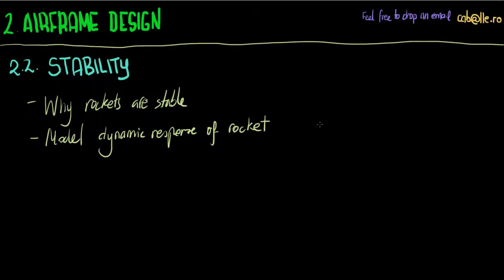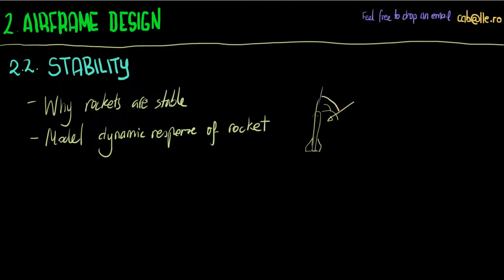This means what happens if the rocket is flying happily and suddenly it finds wind — crosswind. So what's it going to do? If we've designed it properly, it's probably going to stabilize. It's going to turn around and face the wind, if this angle — which we call the angle of attack — is not too large, of course.